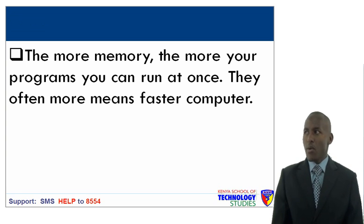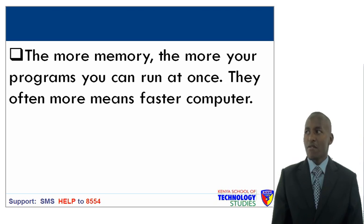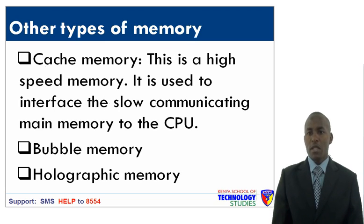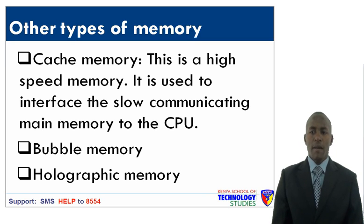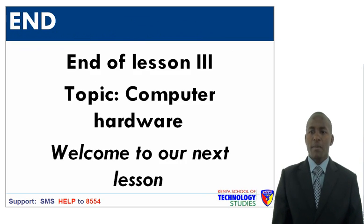The more memory a computer has, the more programs you can run at once, and generally this means a faster computer — you can process programs at a very fast speed. Other types of memory include cache memory, which is high-speed memory used to interface the slower main memory to the CPU. Other memory types include bubble memory, holographic memory, core memory, and semiconductor memory.